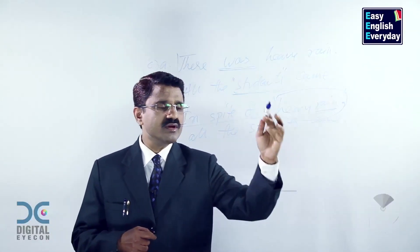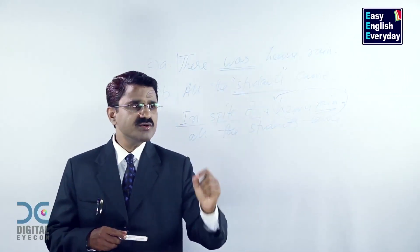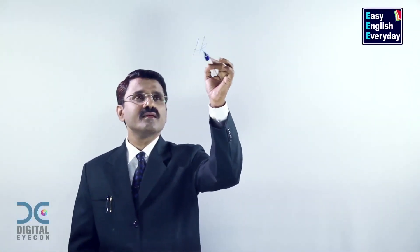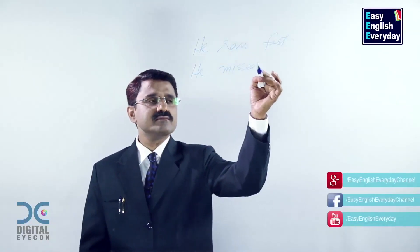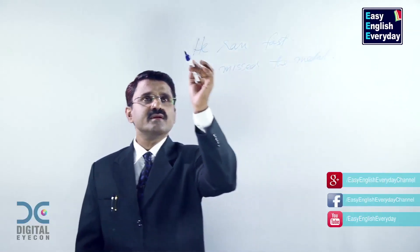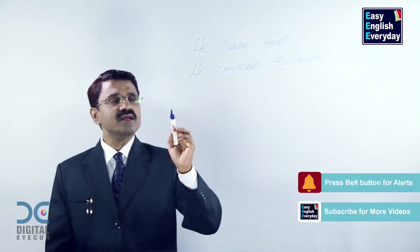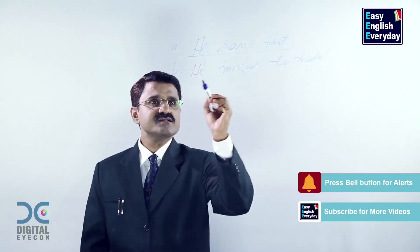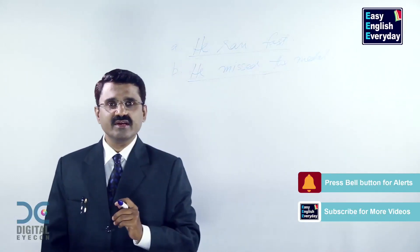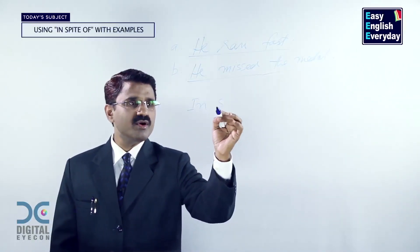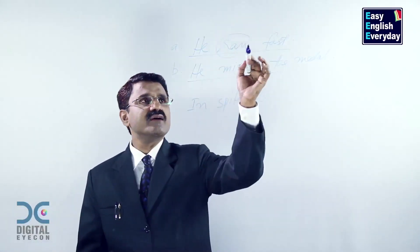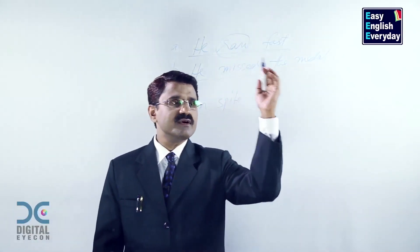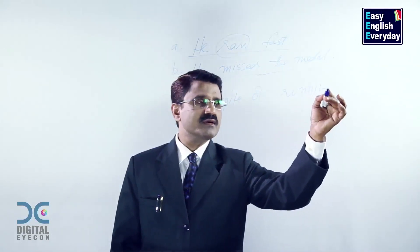Now, not only nouns — you can also use the ing form. How to use an ing form? Look at these examples. He ran fast. He missed the medal. This is cause, this is effect. These are two sentences. When I want to join these two sentences, I can take the help of 'in spite of'. In spite of running fast — because here I have an action verb, I will convert that into ing form. In spite of running fast.